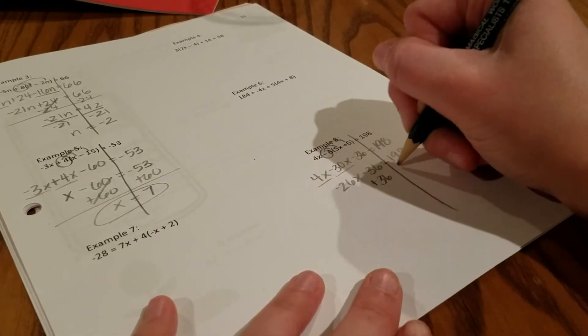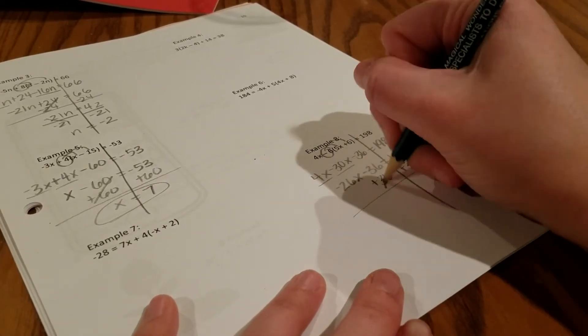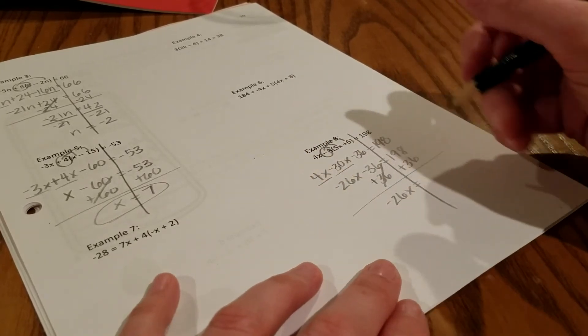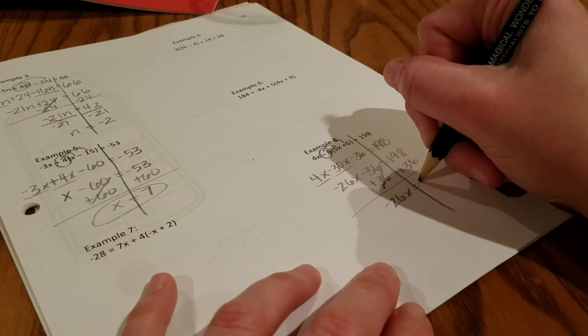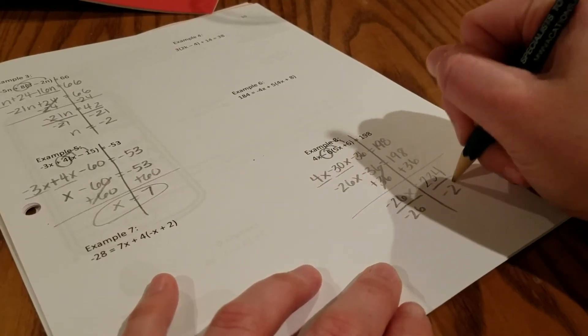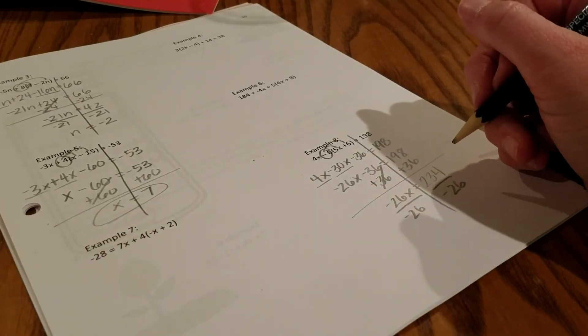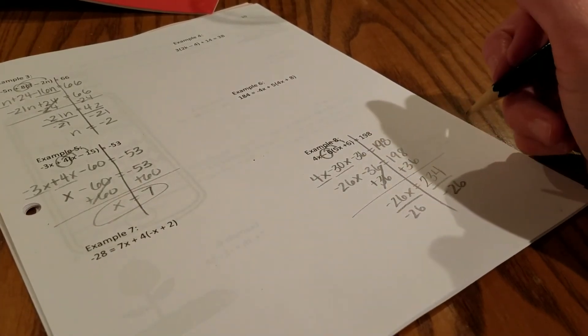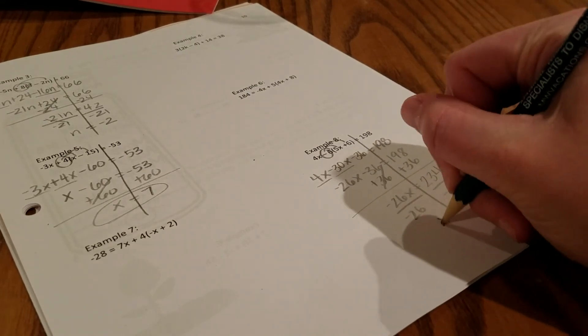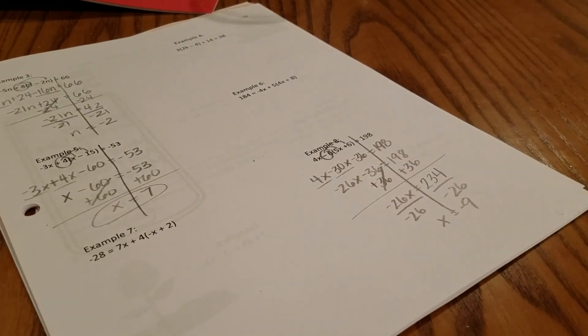Add 36. So negative 26x equals 234. Divide by negative 26. That gives me x equals negative 9.